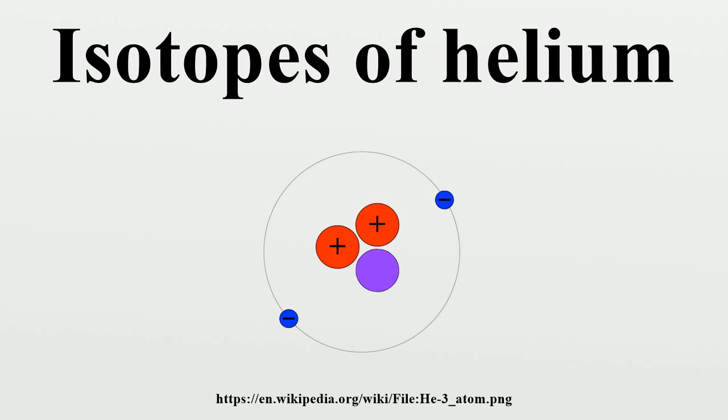In the Earth's atmosphere, there is one helium-3 atom for every million helium-4 atoms. However, helium is unusual in that its isotopic abundance varies greatly depending on its origin.